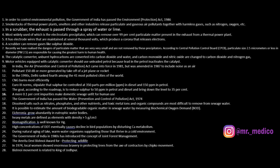The most widely used device is the electrostatic precipitator, which removes over 99% of particulate matter from thermal power plant exhaust. In the electrostatic precipitator, electrode wires are maintained at several thousand volts, which produce a corona that releases electrons. Remember: scrubbers are used to remove SO2.